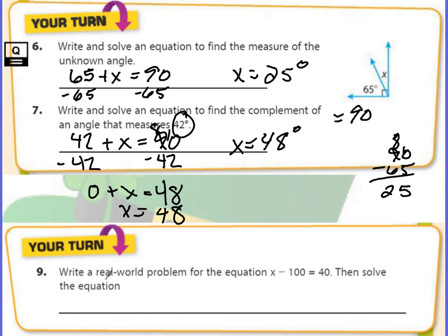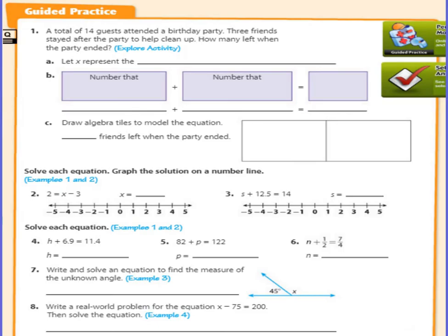And then here you're writing a real-world problem for the equation x minus 100 equals 40, thinking of a situation and creating your own word problem. We will check this in class because there are so many different options. The last thing I need you to do is complete your guided practice. You do not have to use the number lines, but I do want you to show all of your work and show how you are balancing your equations. As always, if you have any questions, please email me or write them down so we can go over them in class.